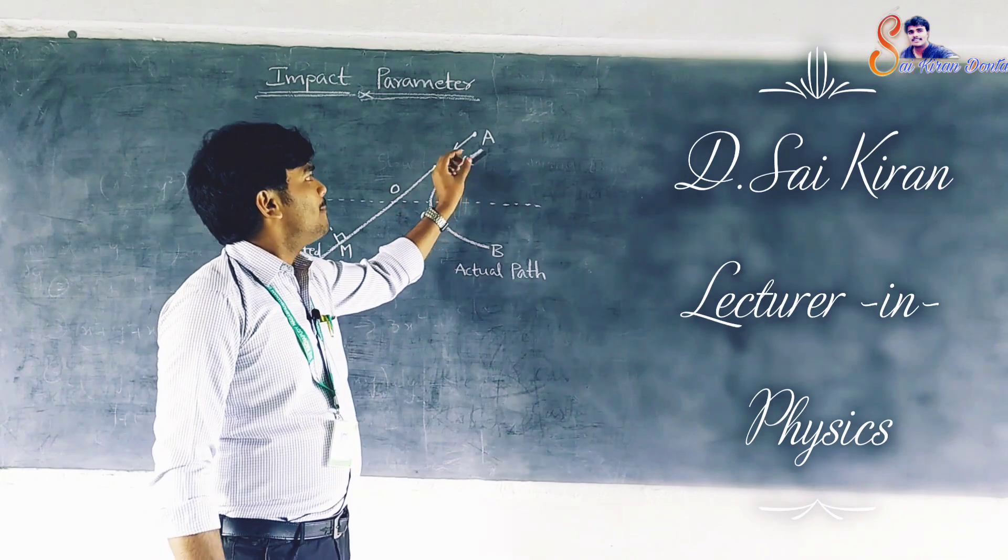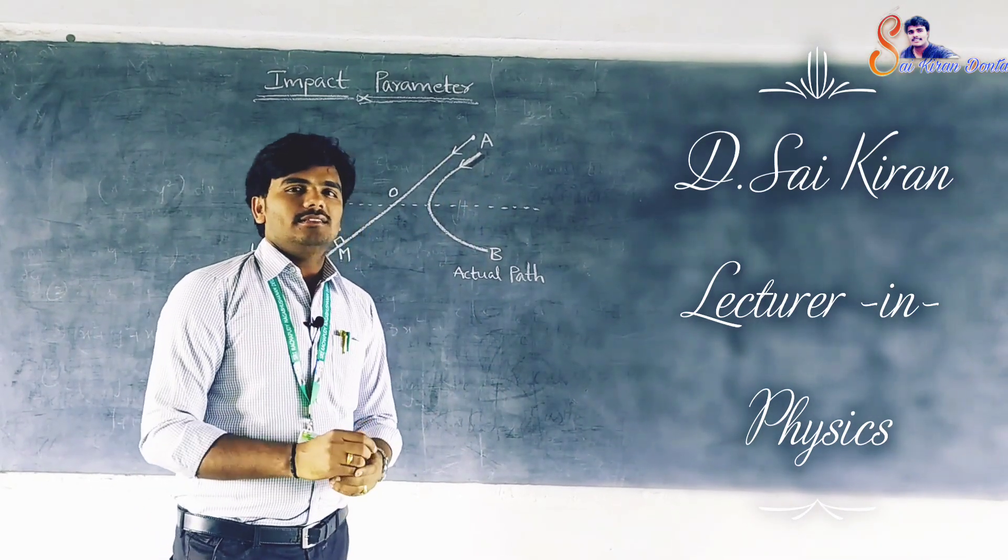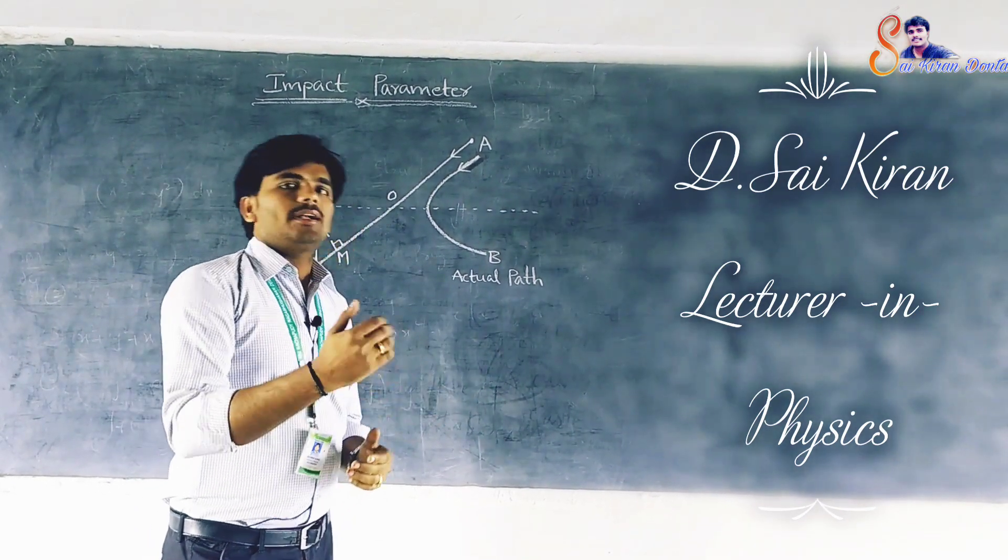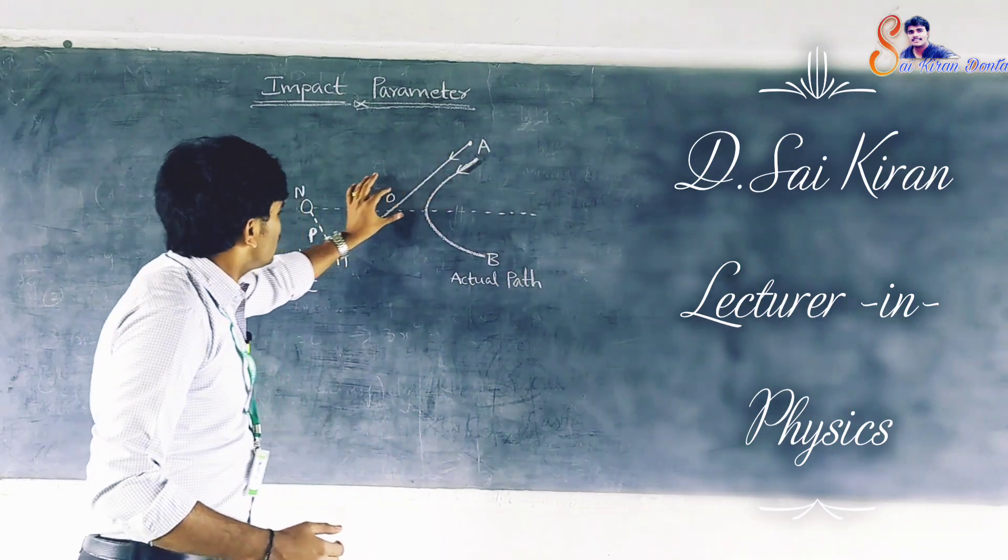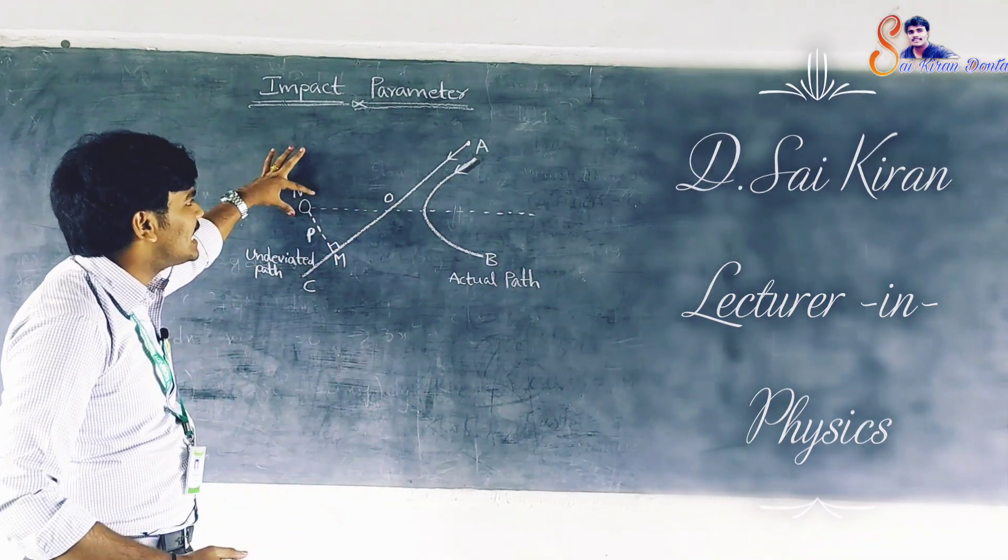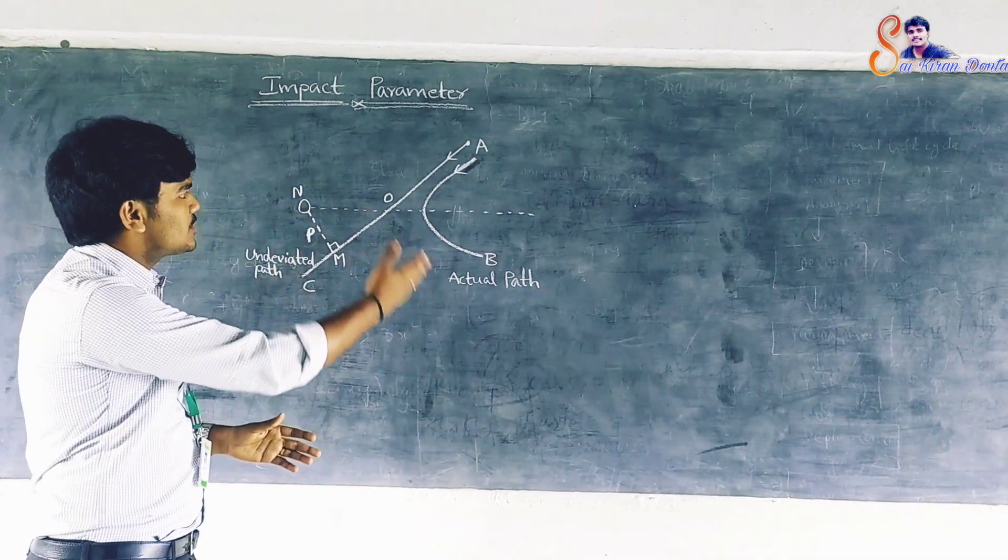Consider a positively charged particle like a proton or an alpha particle. He is approaching towards a massive nucleus N of an atom as shown in the figure.